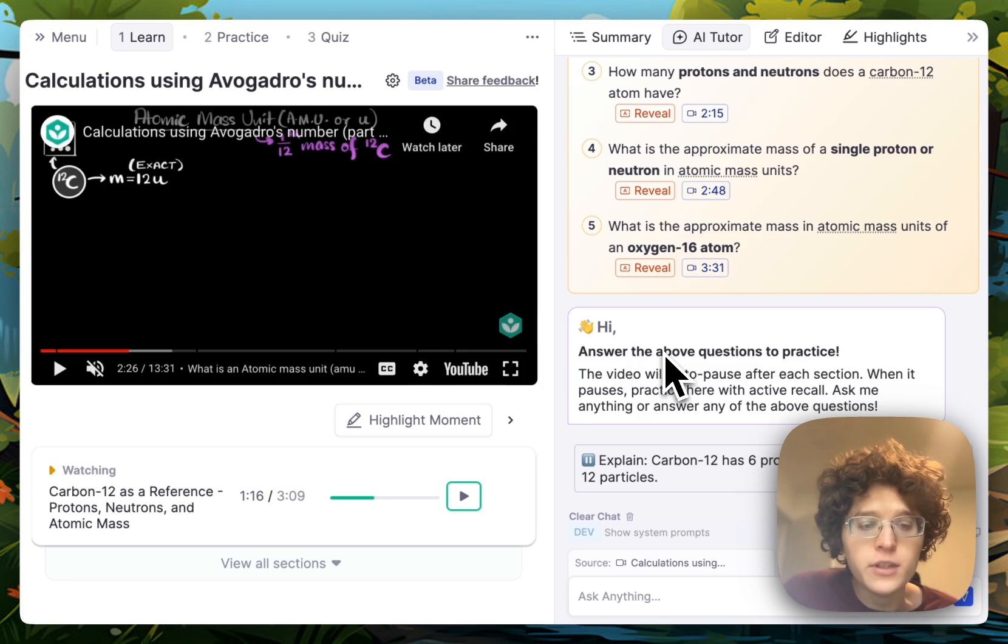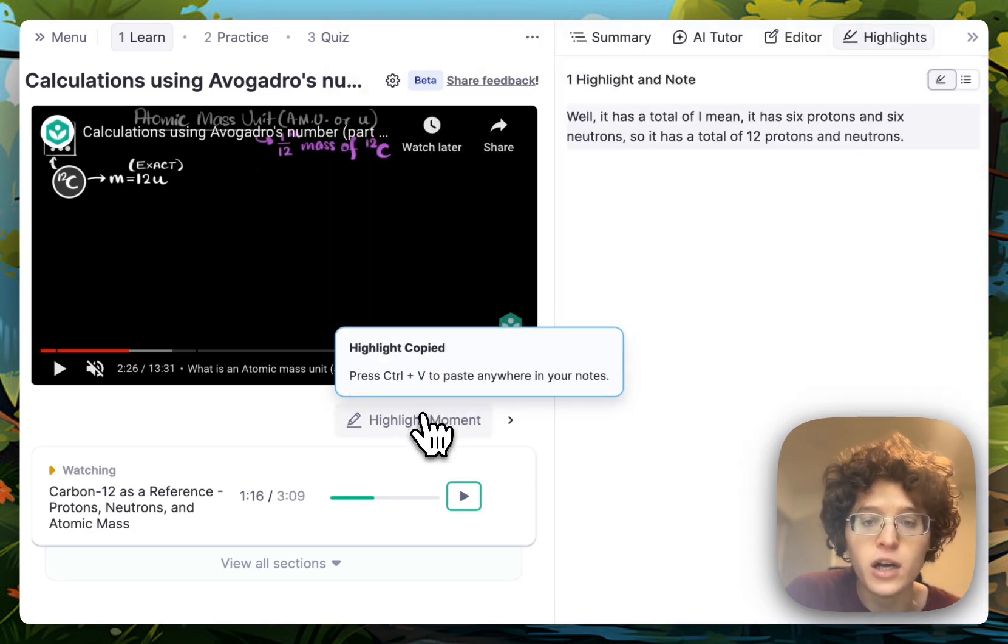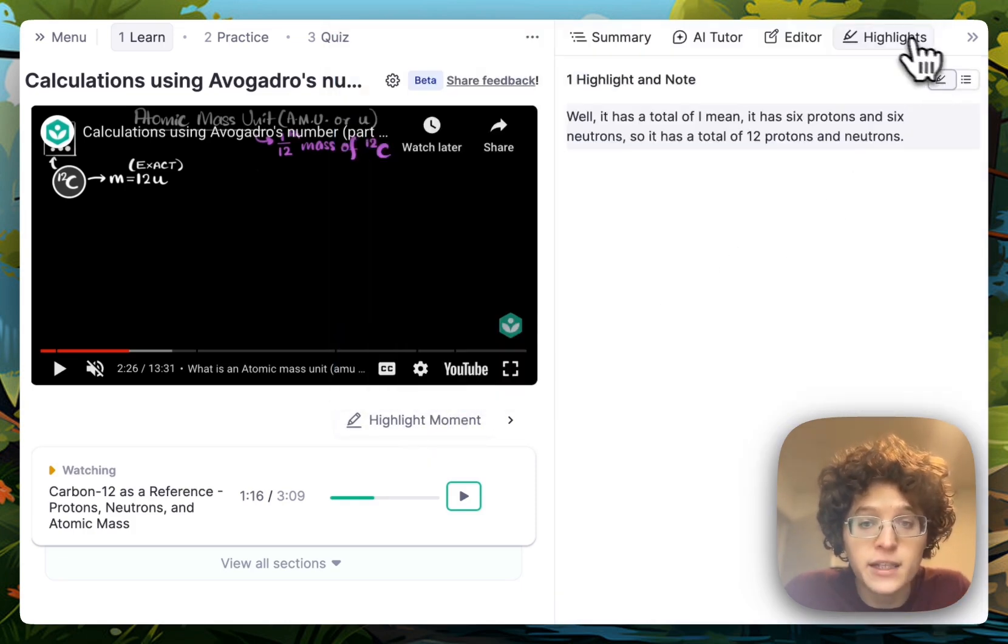While watching your video, you can also highlight key moments that you want to remember. Just hover over the highlight moment button here, and if you want to highlight this key sentence, then just click it. The highlight will automatically be saved to the highlights panel on your right and copied to your clipboard.